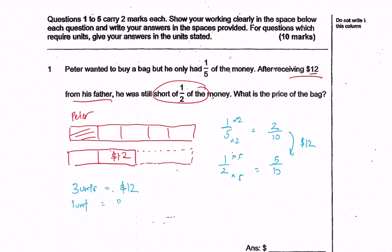One unit would then be $4. And therefore, the price of the bag would be $40. So very importantly, all you need to do is to make sure that the denominator is always the same for easy comparison, and this will help you achieve your answer more quickly.